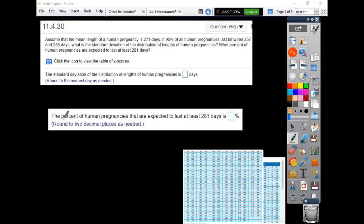Okay, so this next question applying Z-scores, standard deviations, and means to a real-life application - this comes up almost all the time as actual data. The mean length of a human pregnancy is 271 days, and if 95% of all human pregnancies last between 257 and 285 days, what's the standard deviation?